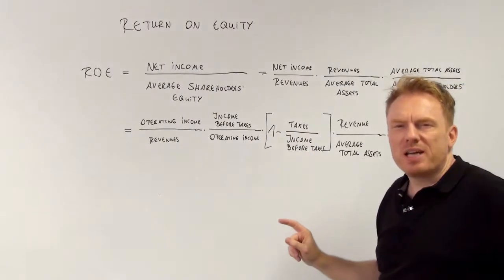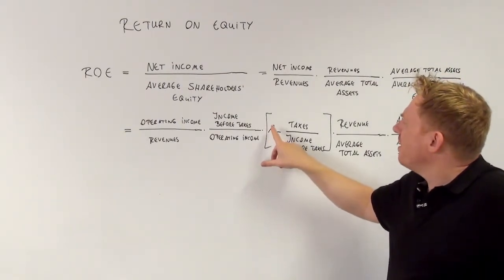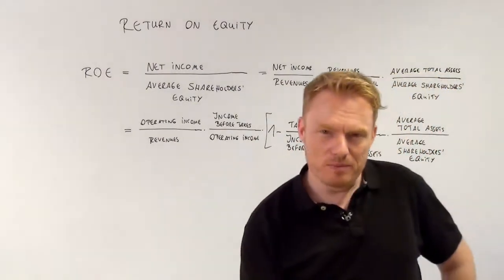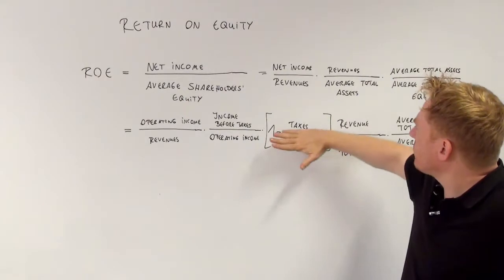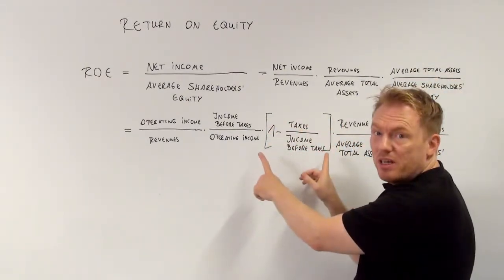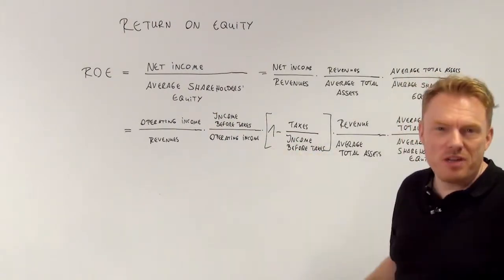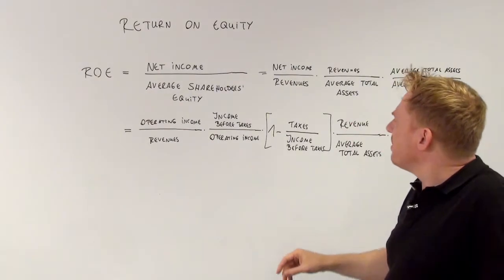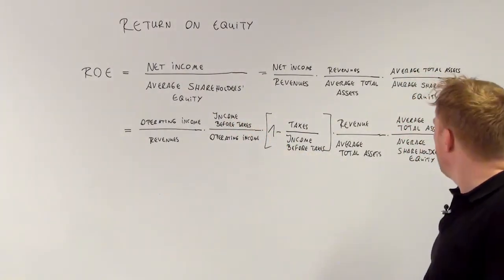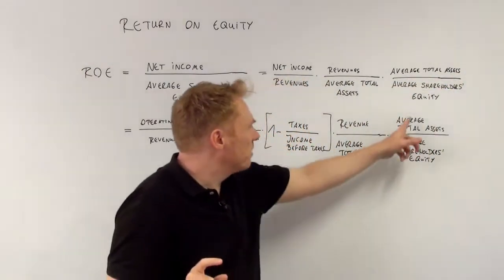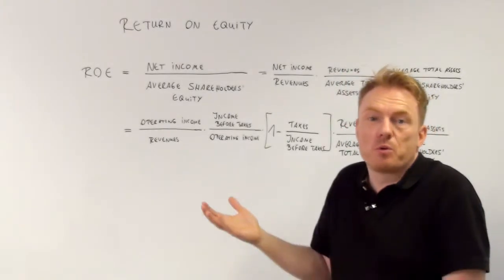Look at this part: one minus taxes divided by income before taxes. If we treat one as income before taxes divided by income before taxes, we get income before taxes minus taxes, which equals net income. So the numerator in those brackets is just net income divided by income before taxes. Income before taxes cancels, revenues cancel, and average total assets divided by average total assets cancels.